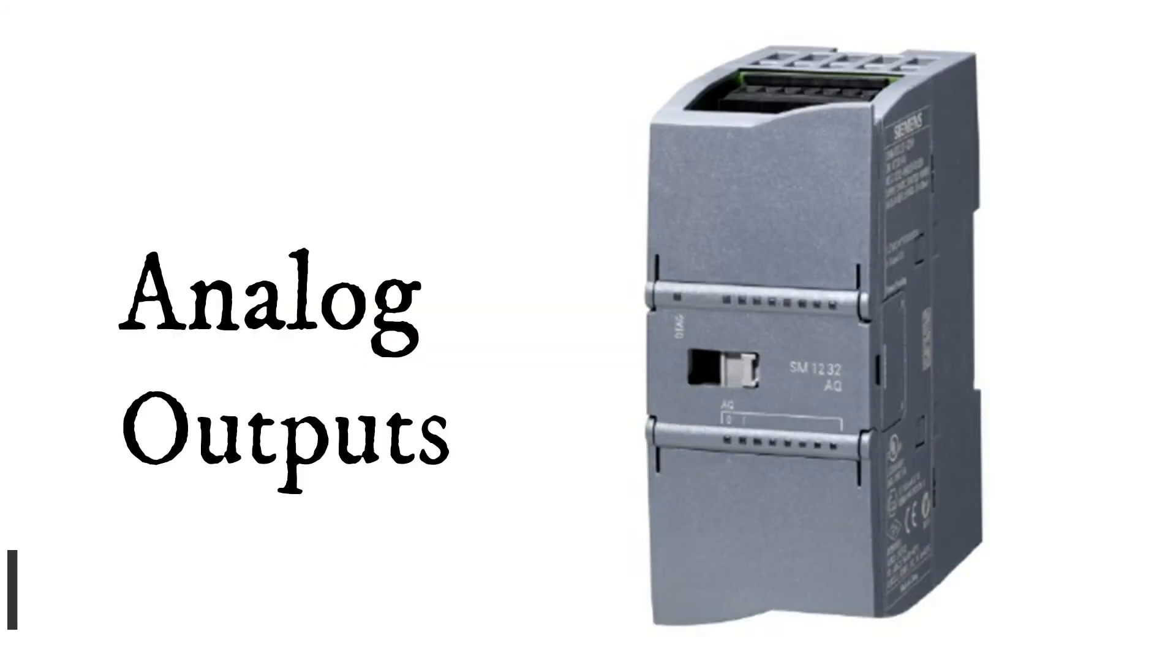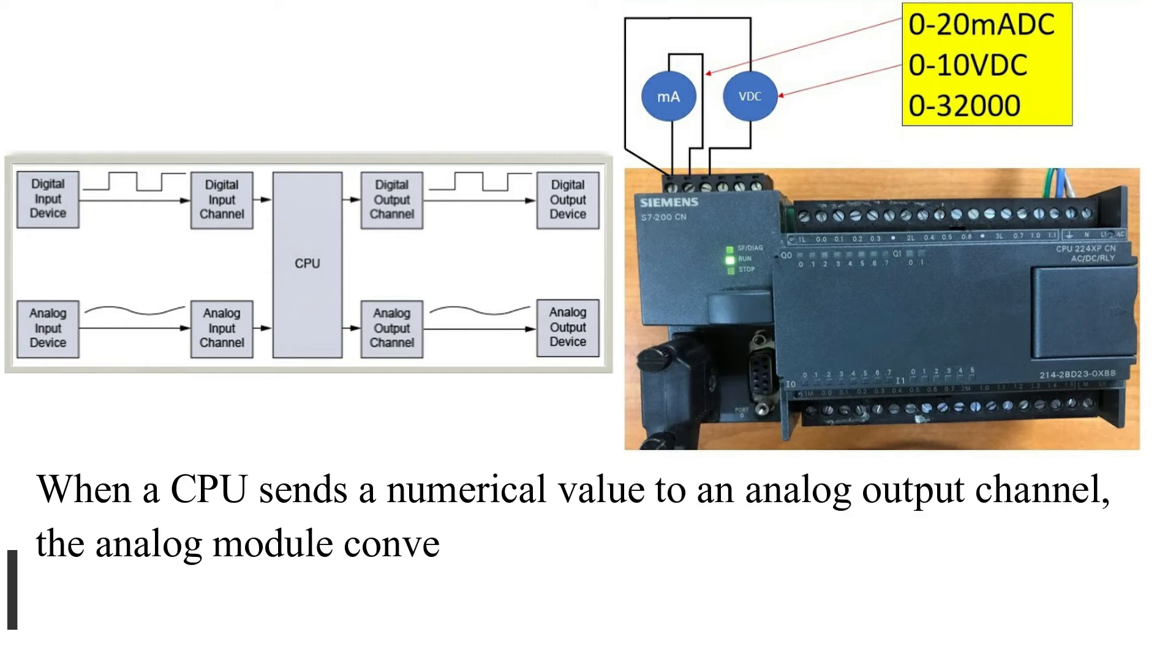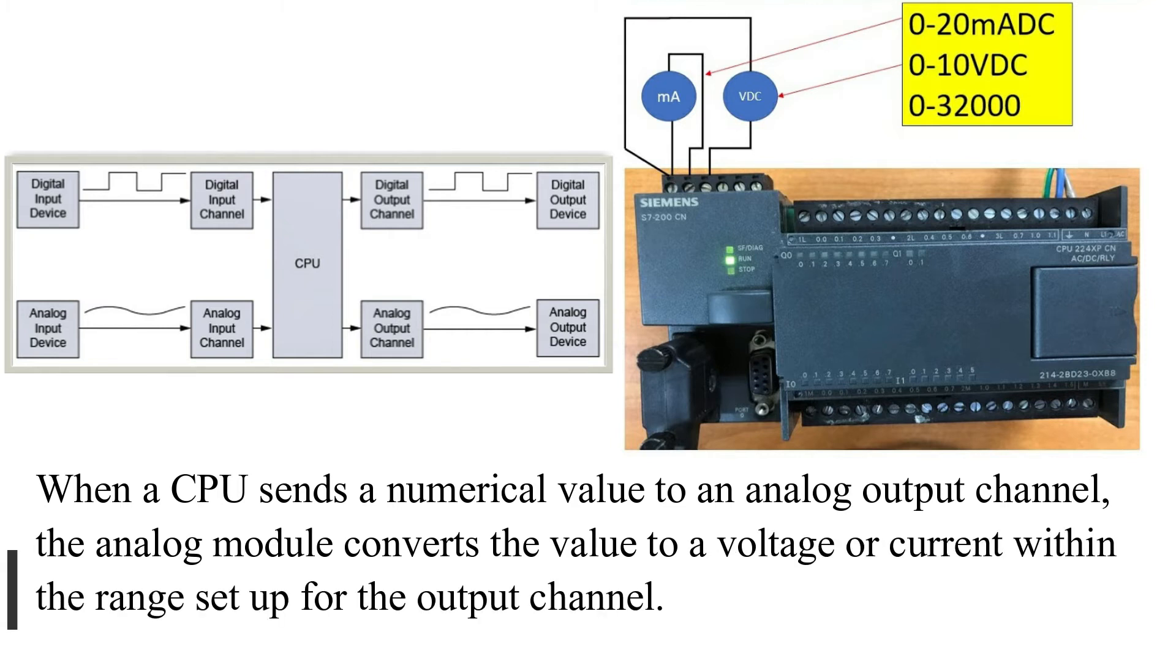Analog Outputs: When a CPU sends a numerical value to an analog output channel, the analog module converts the value to a voltage or current within the range set up for the output channel.